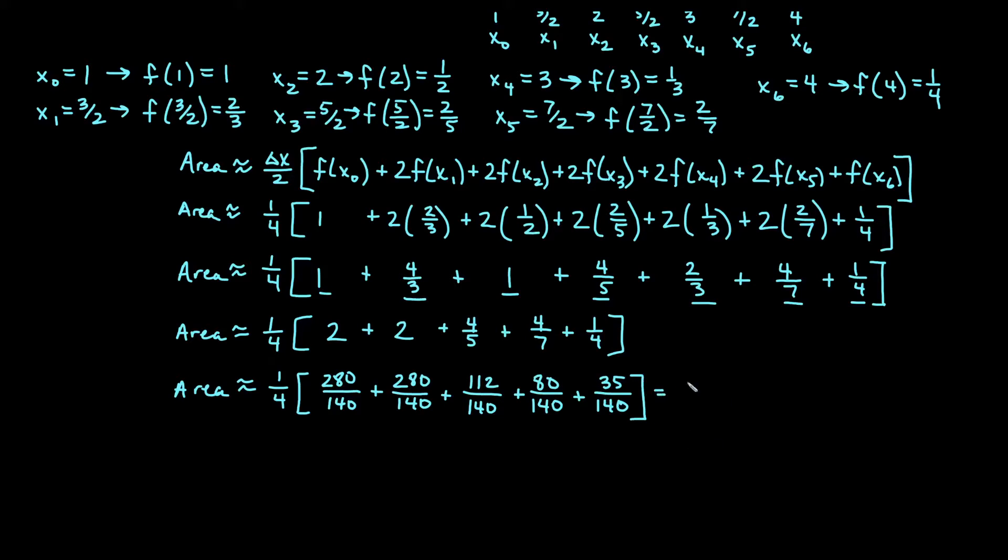So then we'll go ahead and add all our stuff in here. And that's going to give us 787 on the top over 140. We'll go ahead and multiply our bottom by 4 now. And so our approximation, we get 787 over 560.